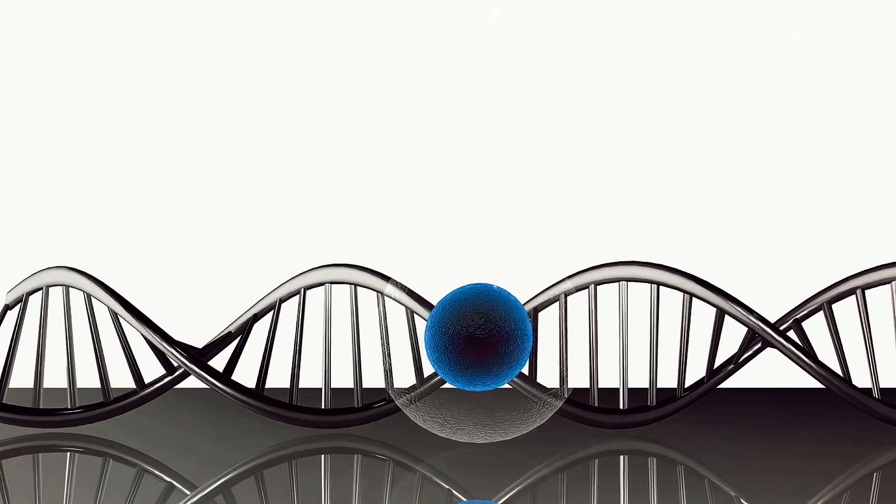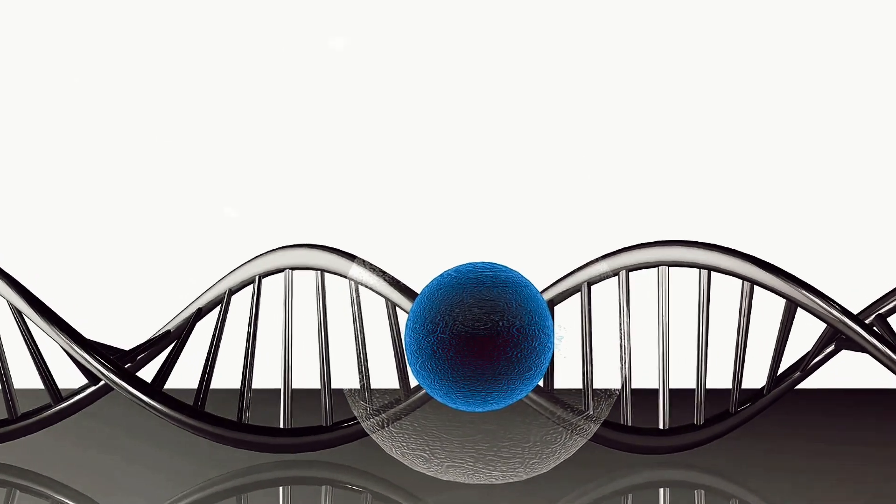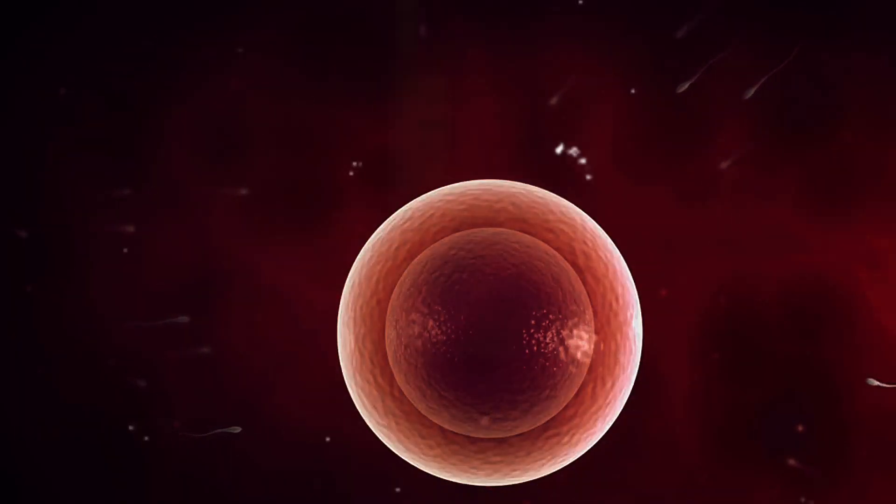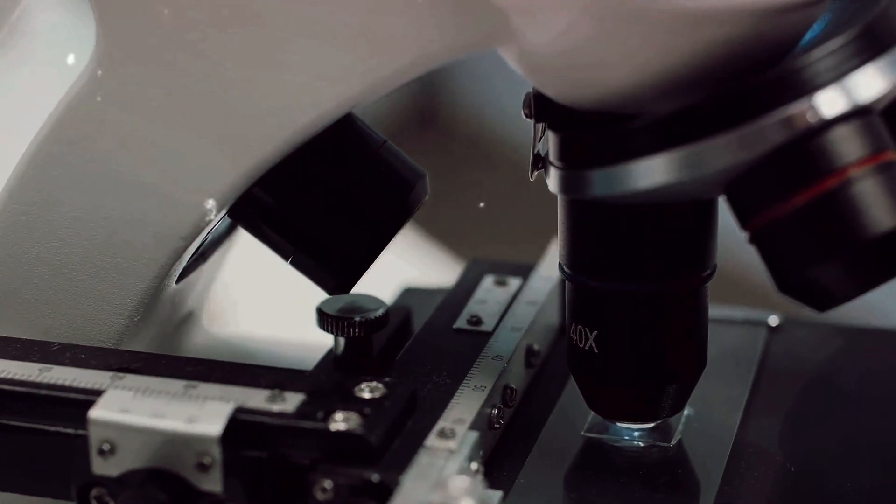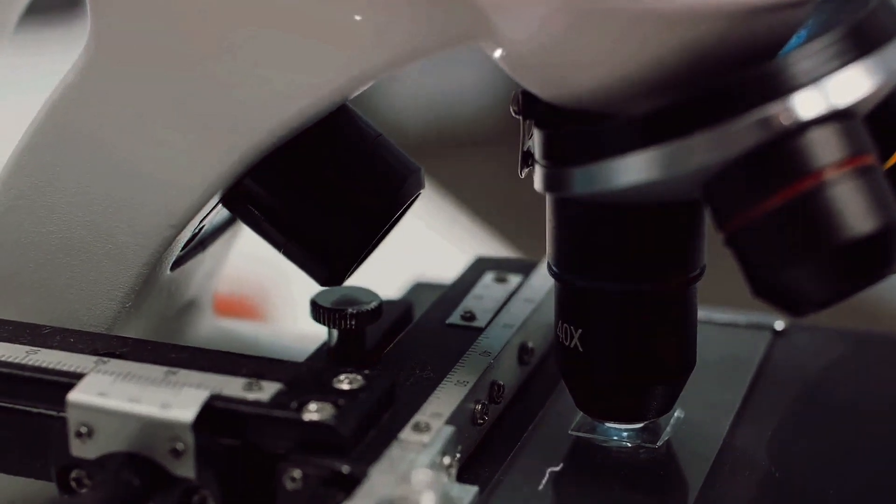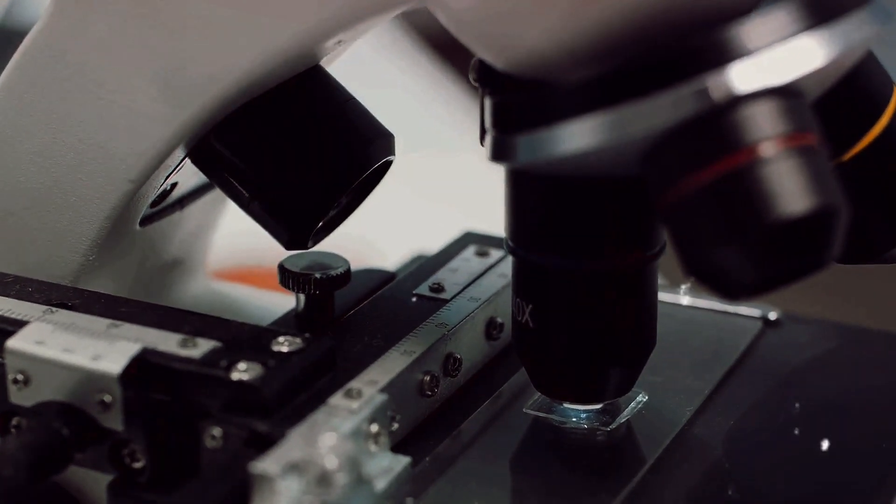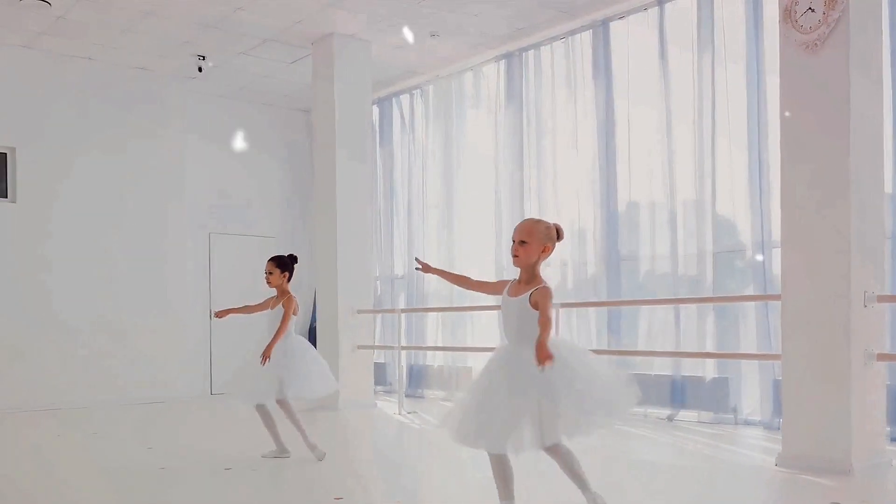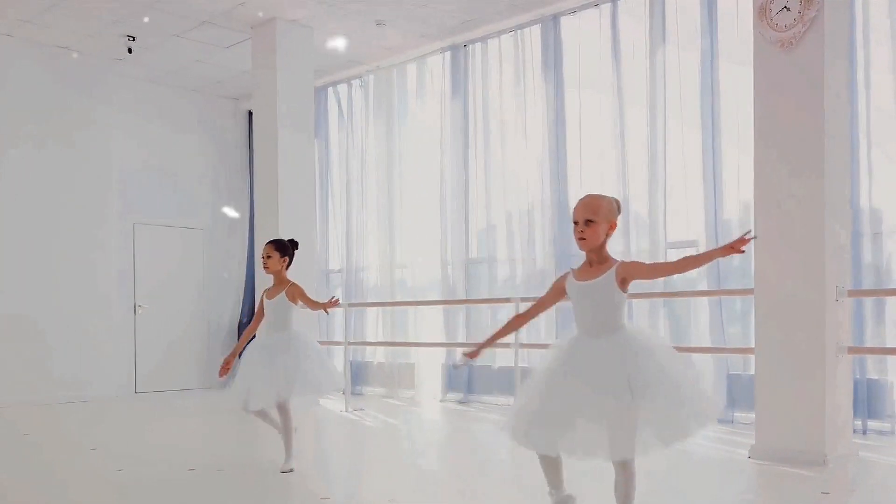The third step is where the magic happens, the fusion of the somatic cell and the egg cell. Now, let's dive into the fascinating process of cell fusion and activation. Imagine two dancers coming together in a perfectly choreographed routine. That's how we can picture the fusion of the somatic cell and the egg cell. The somatic cell, which originated from the donor, is carefully combined with the enucleated egg cell.